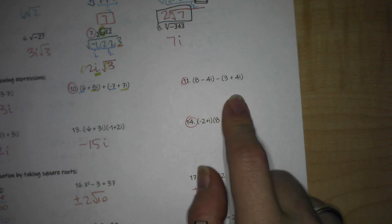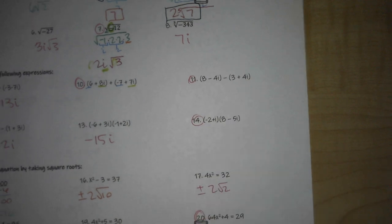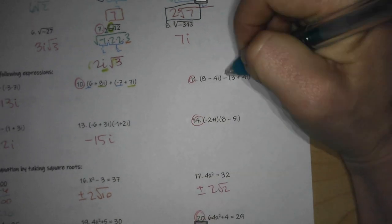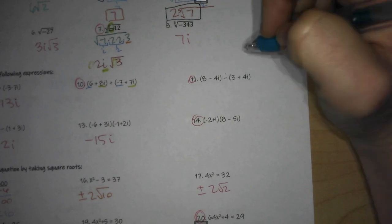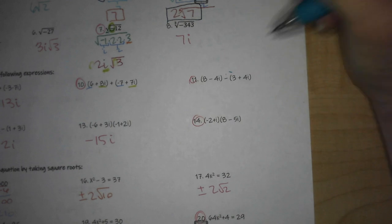On your subtraction, what you have to remember if you don't have a calculator is this negative sign changes the sign of each of your second equations. So this becomes negative 3 and this becomes negative 4i.